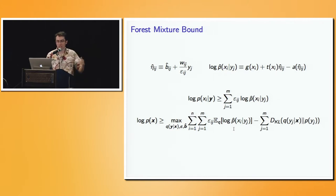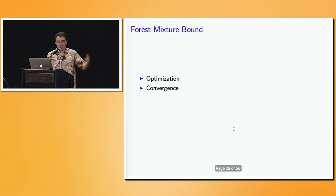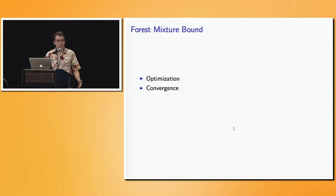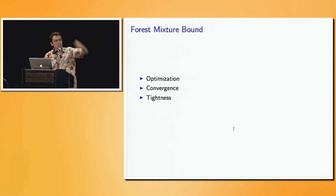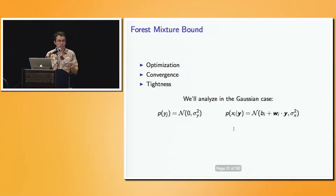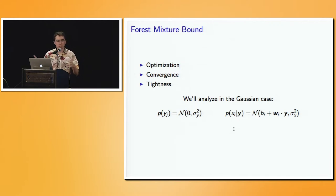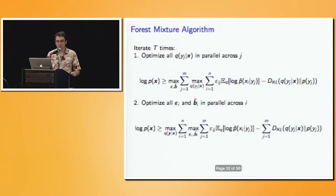The rest of the presentation is about analyzing this new mathematical object. We're going to optimize it with an algorithm, examine how quickly it converges, and talk about the tightness of the bound, and then I'll show experiments. All of the analysis is easy in the Gaussian case; for non-Gaussian models you'll still need this math — come talk to me later.